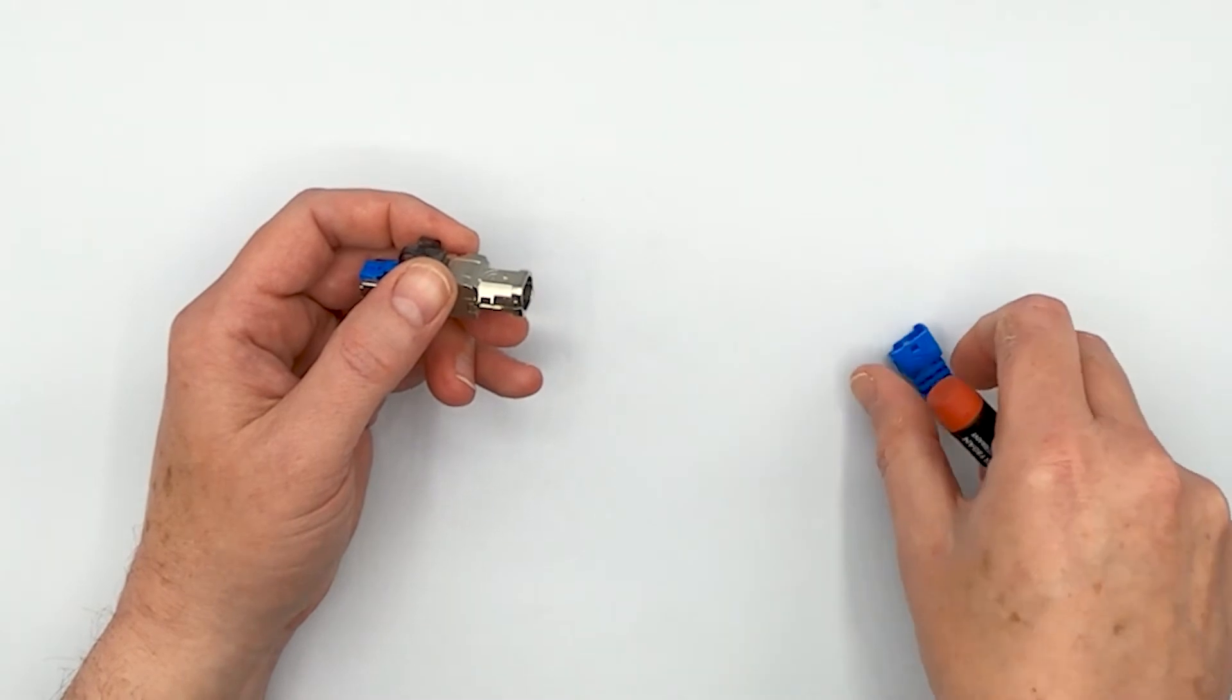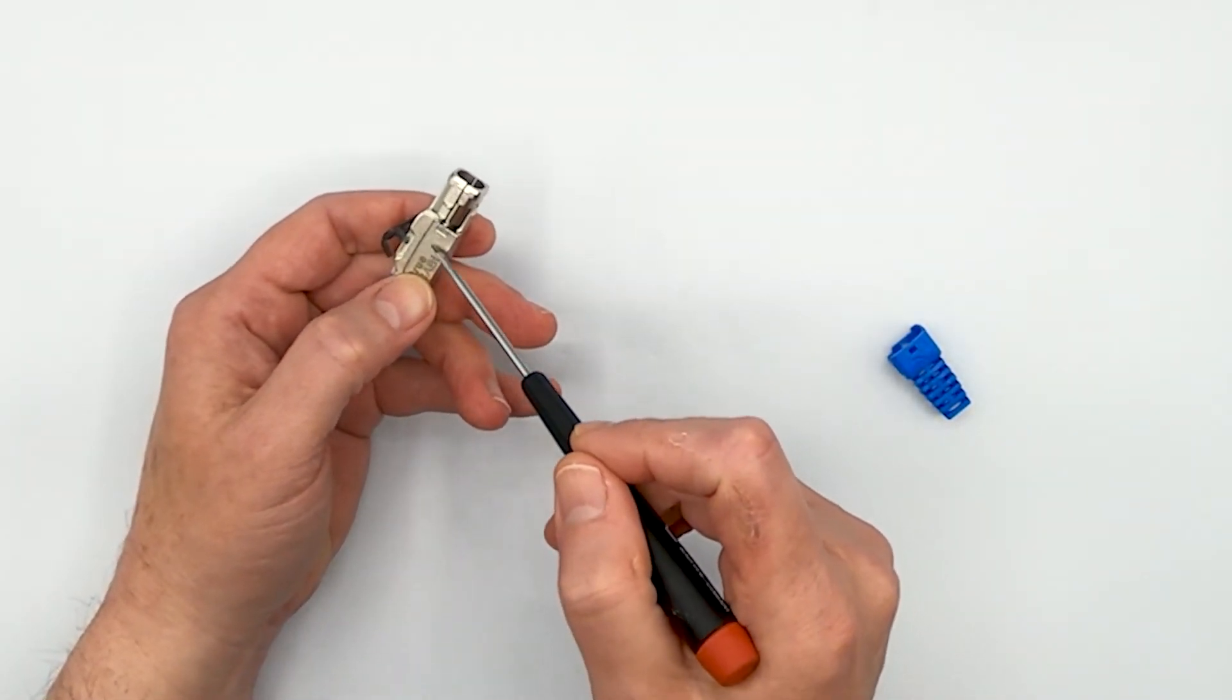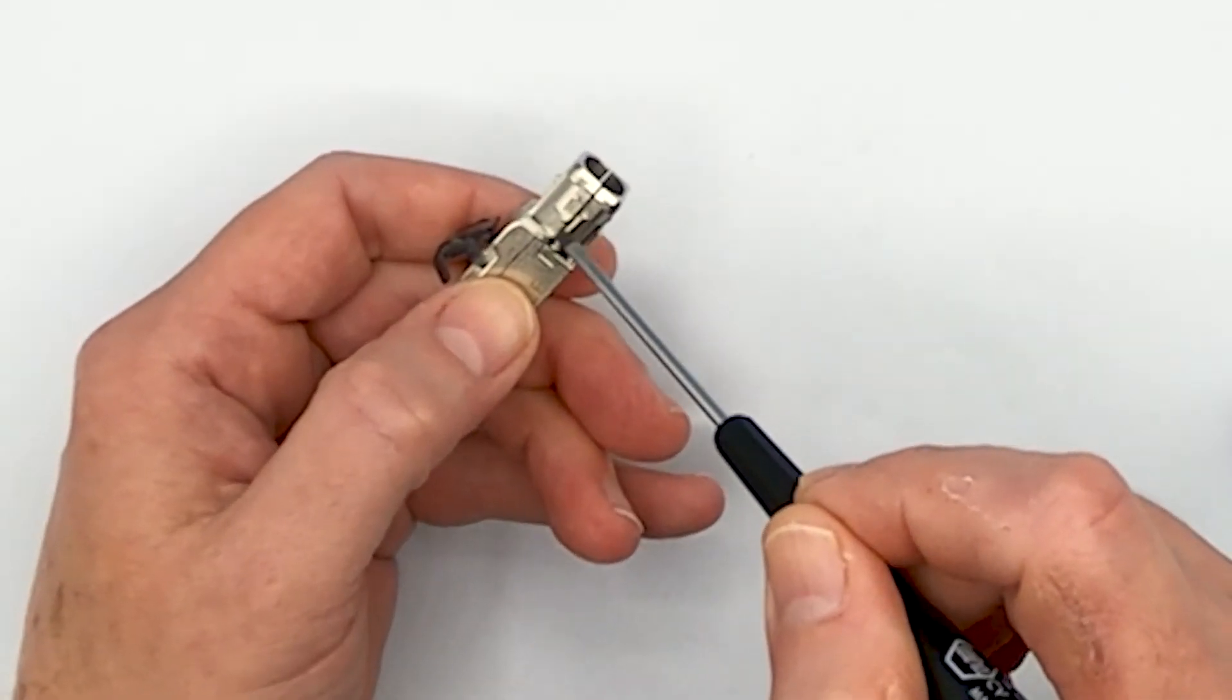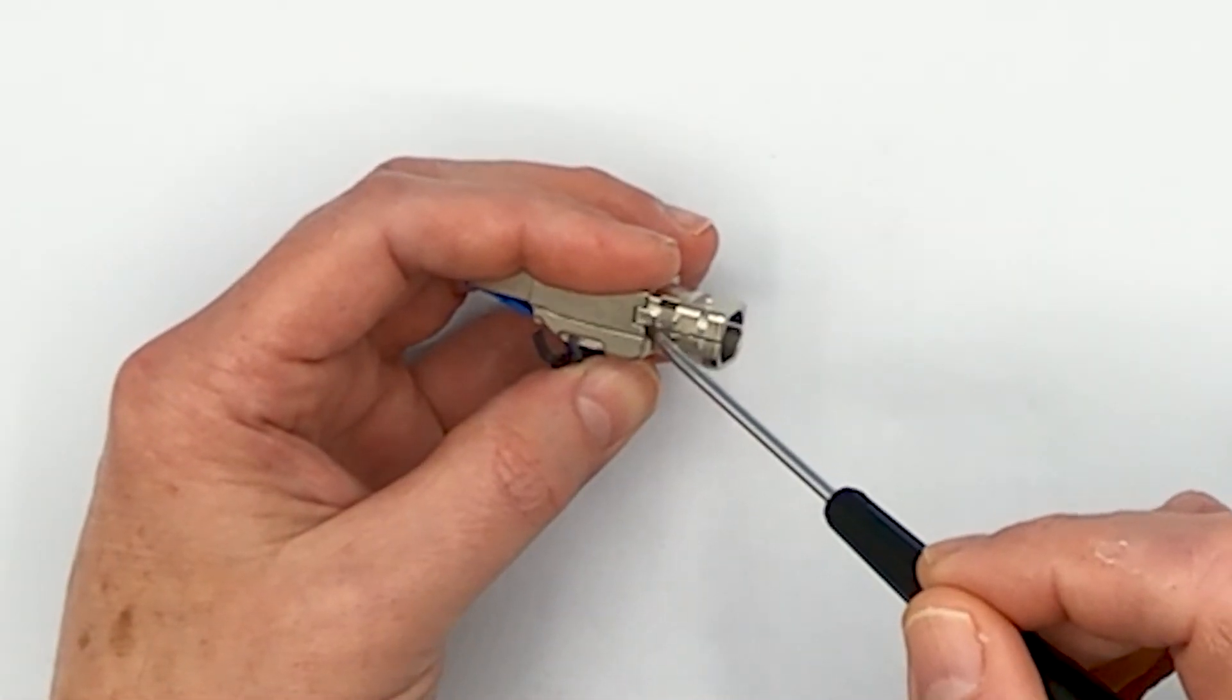All right, so once you got that off, the next thing is you got to get the actual field termination plug mechanism itself open. Well, there's two small metal tabs. There's one here and there's one here.